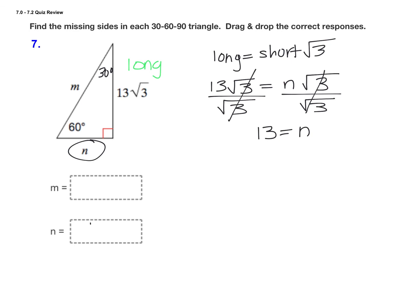Now we have our short leg. n is 13, so put that in the n box. Now that we know the short leg is 13, we can find the hypotenuse. The hypotenuse is 2 times the short leg, so m equals 2 times 13, which means m equals 26.